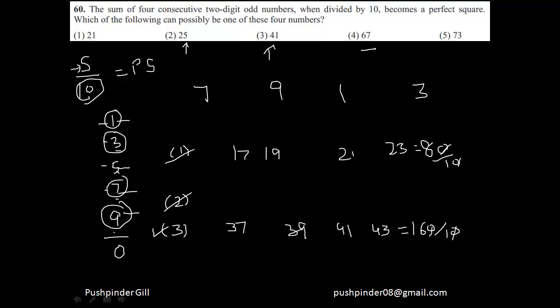If you try the other remaining options, they won't give you the answer. They will give you 280, which is not a perfect square. So that confirms that the third option is the correct answer.